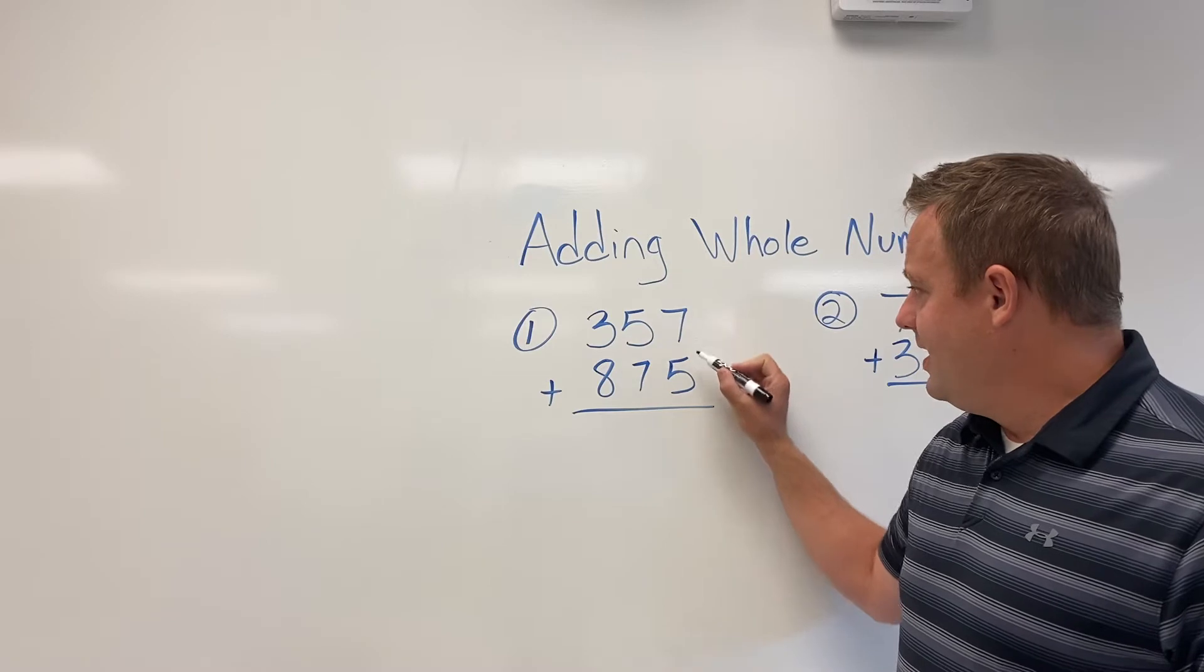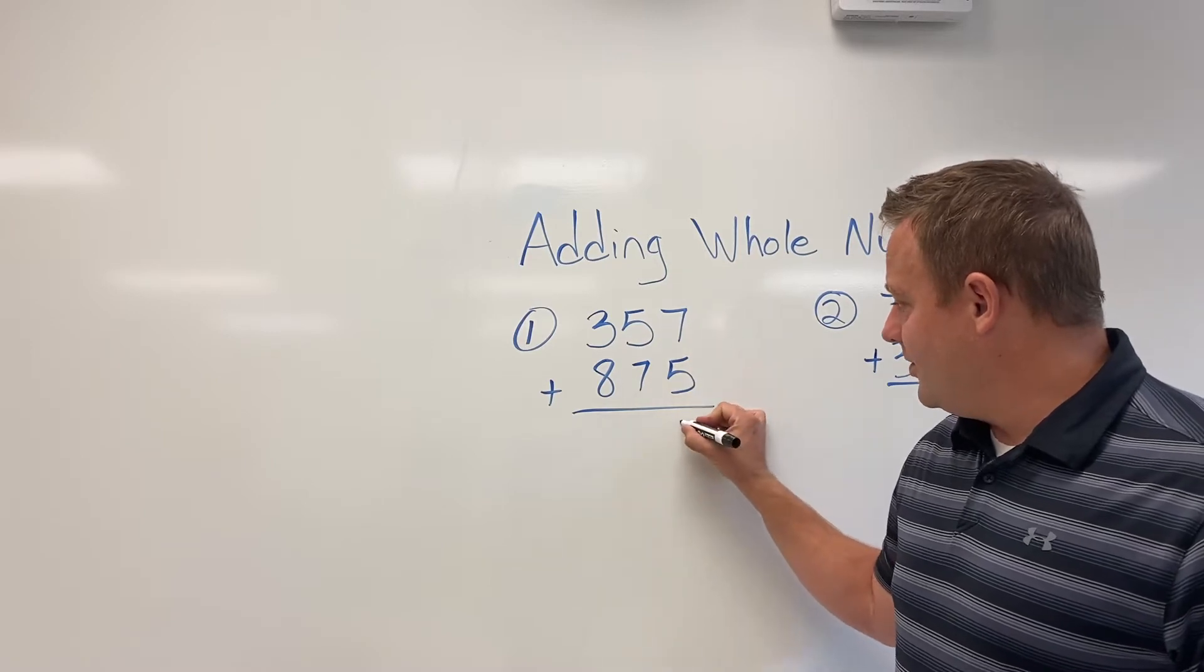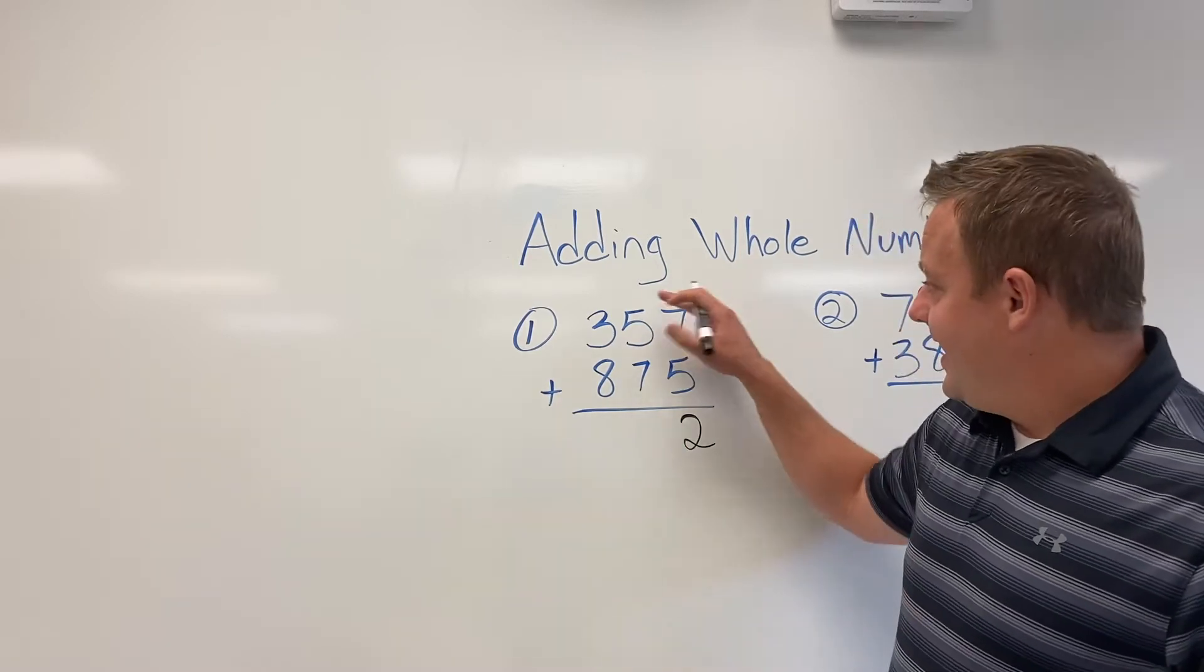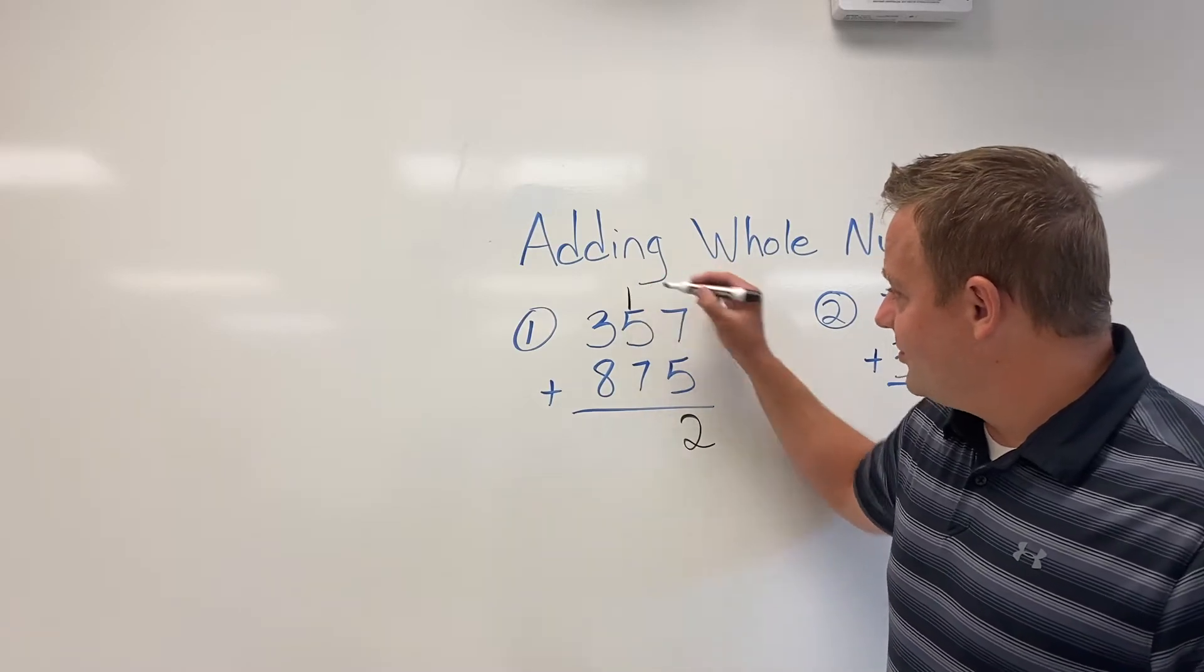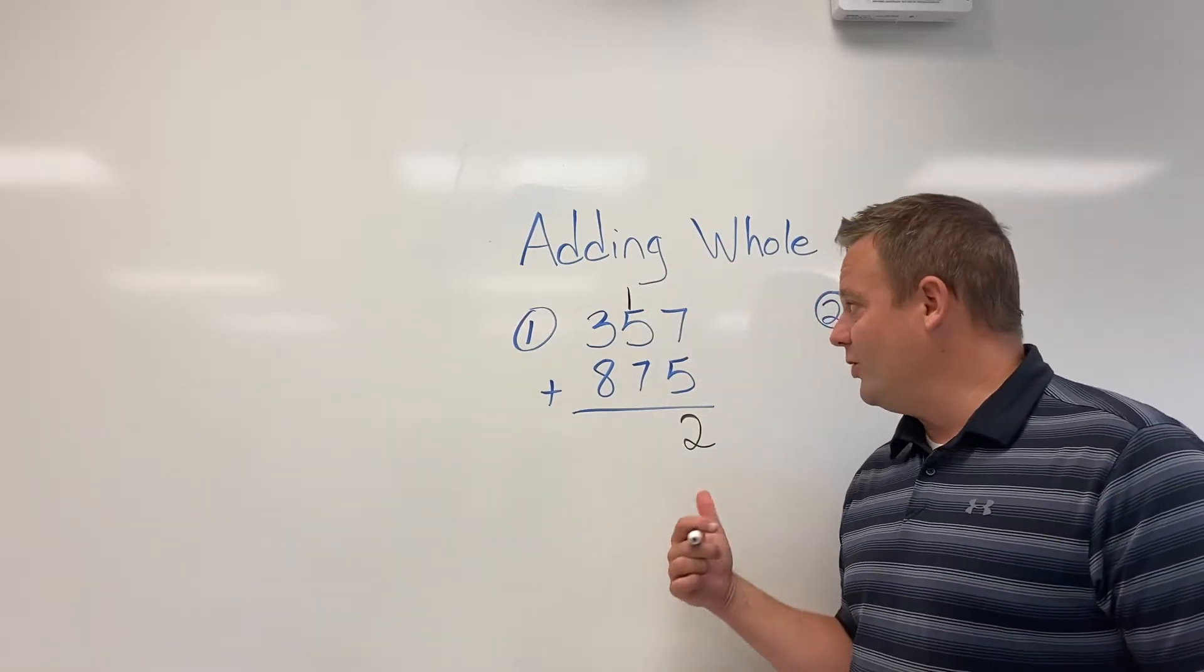So 7 plus 5 is 12. So the ones place goes here and the tens place goes here. So 12 is made up of one 10 and two ones.